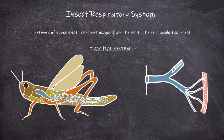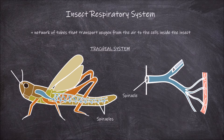The first part of this tracheal system are the spiracles. The spiracles are the external openings through the exoskeleton that run along the side of the thorax and abdomen. The number of spiracles varies in different insects. The function of the spiracle is to allow air to enter into the internal structures of the respiratory system.